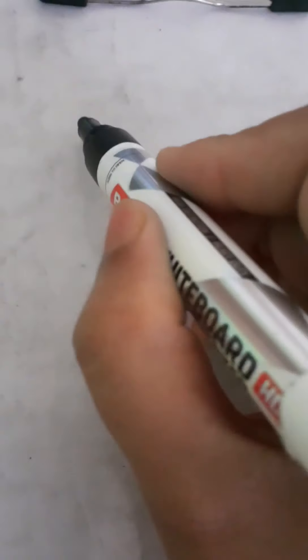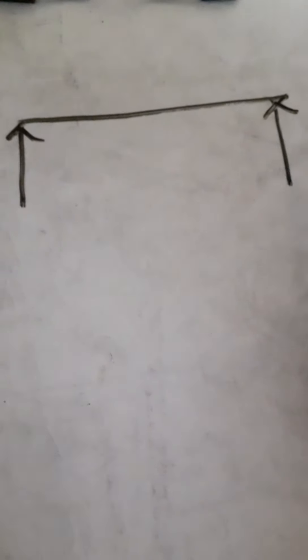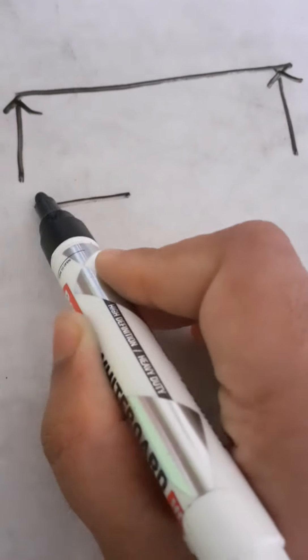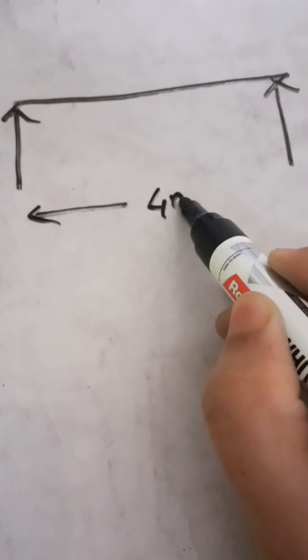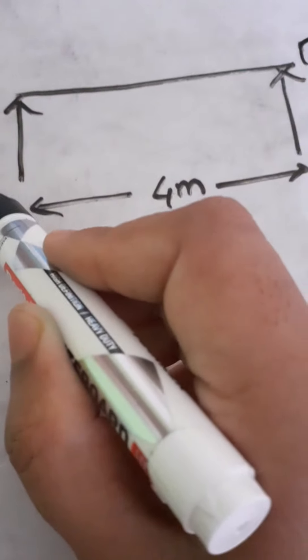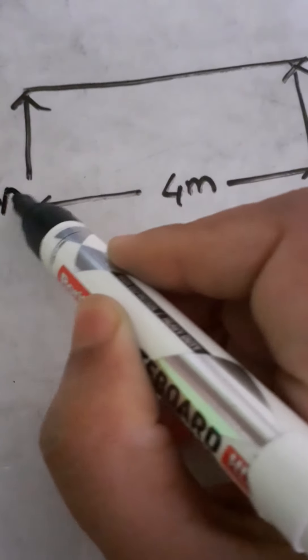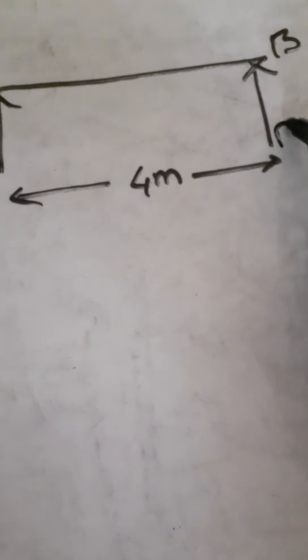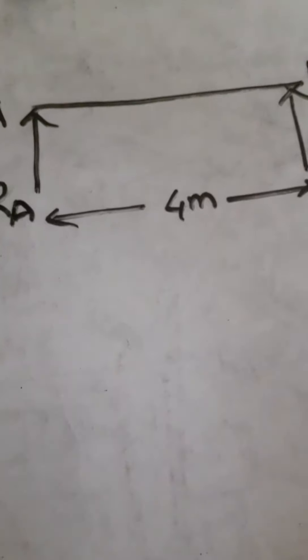It is a simply supported beam with two supports, and the span is around 4 meters. The length is 4 meters, so we will name this as A and this one is B. This reaction will be RA and this will be RB.